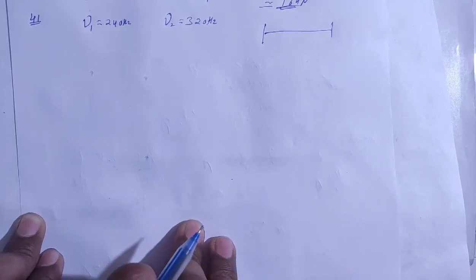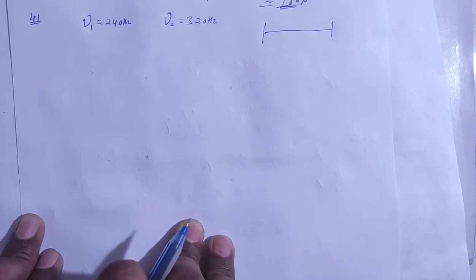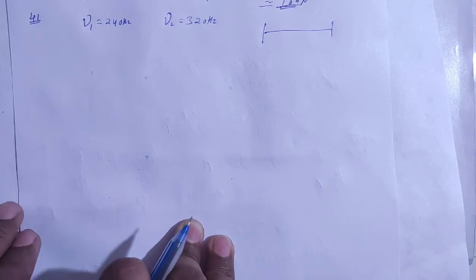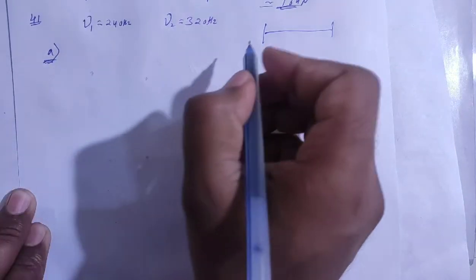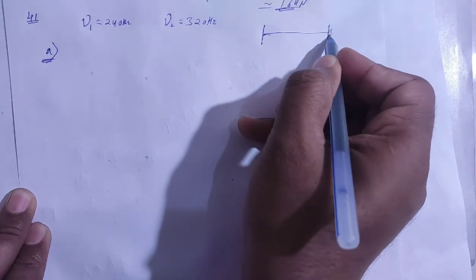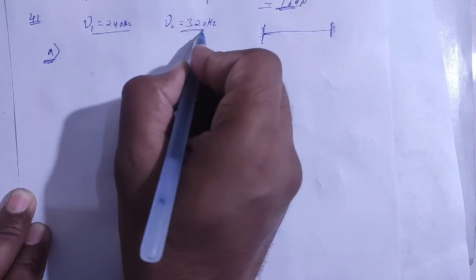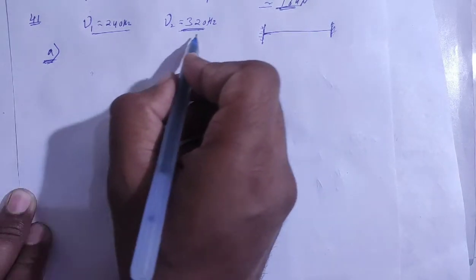This is webinar solution chapter 15, wave motion and wave on a string, question number 41. A wire fixed at both ends is seen to vibrate at resonance frequencies of 240 and 320 hertz. The first question asks for the maximum value of fundamental frequency. These two frequencies are given to us as resonance frequencies — what is the fundamental frequency?